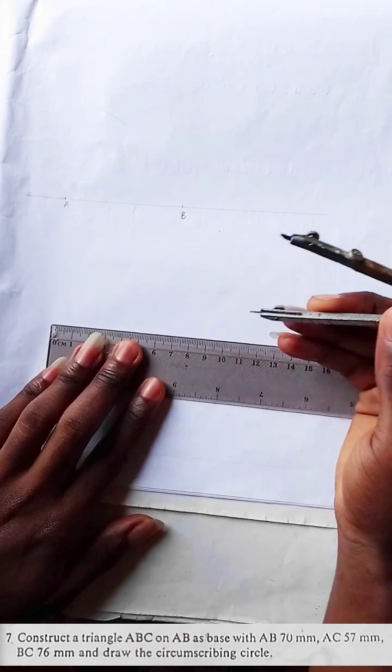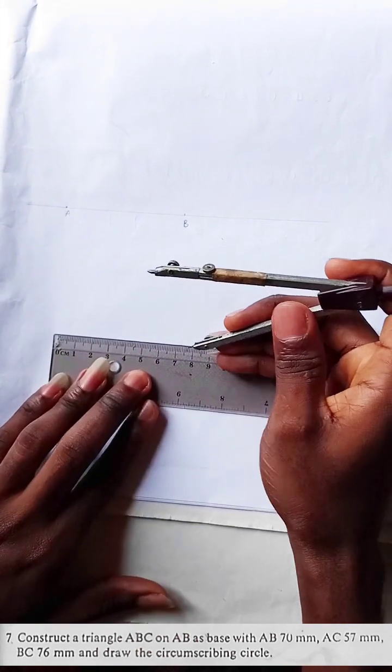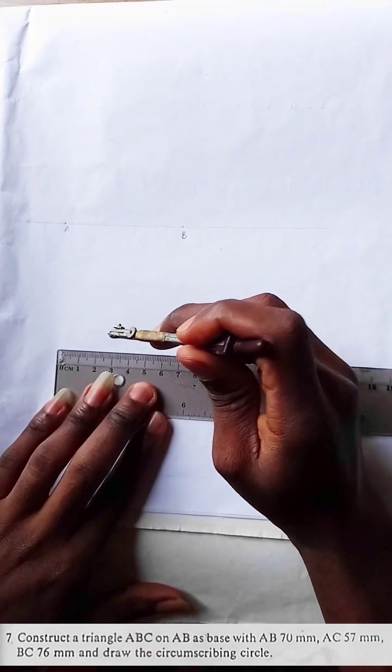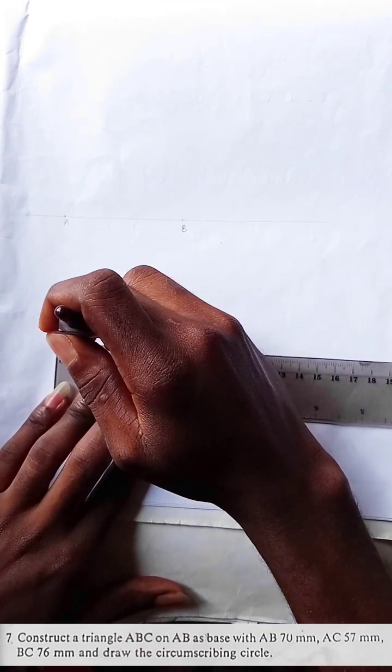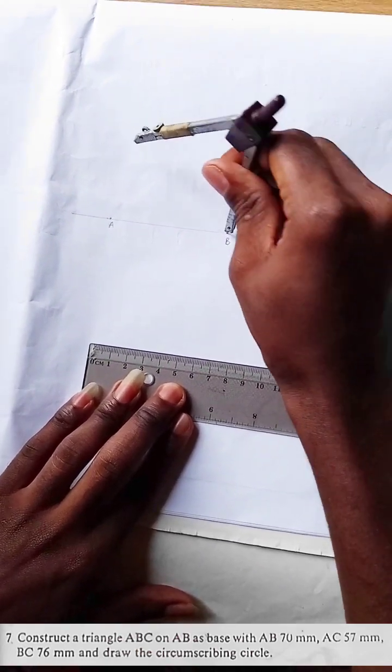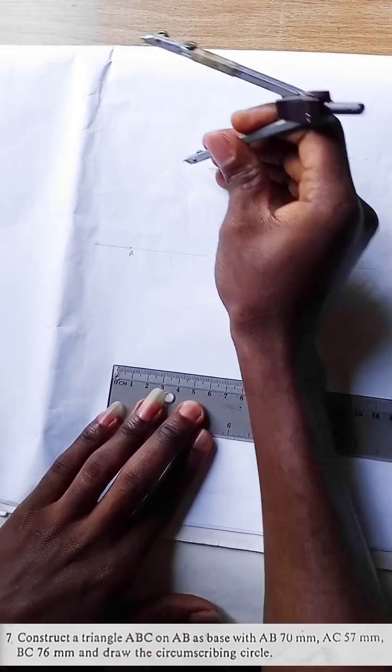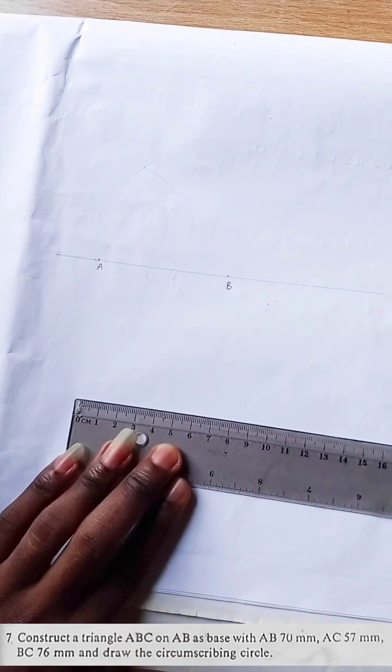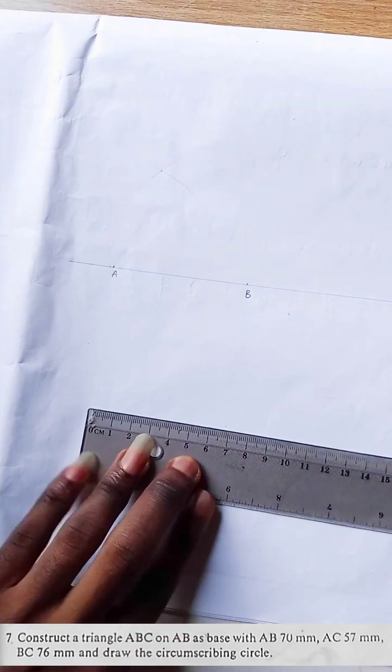BC is 76 from our question, so we'll measure 7.6 again. 7.6, take it, make an arc. At this point of intersection, we draw our line vertically to point A and point B. This is what I mean.